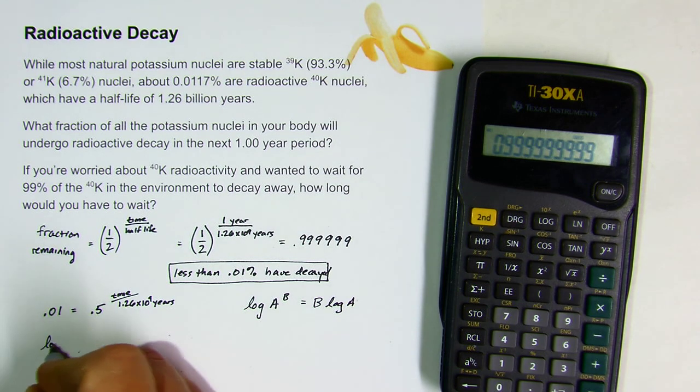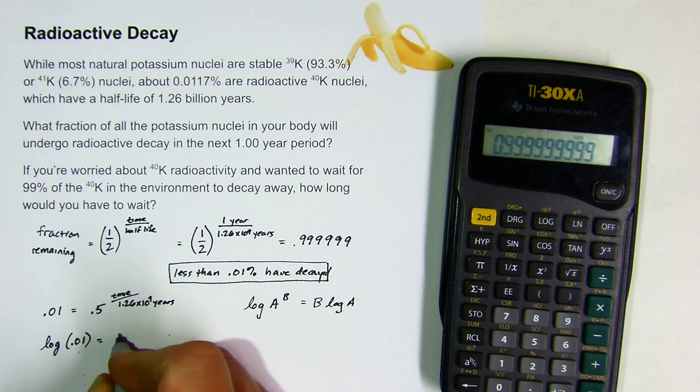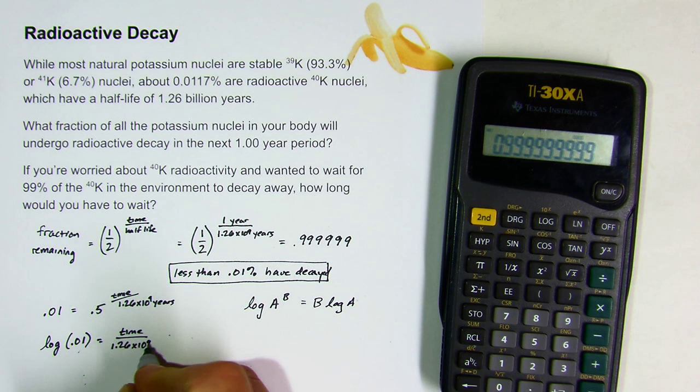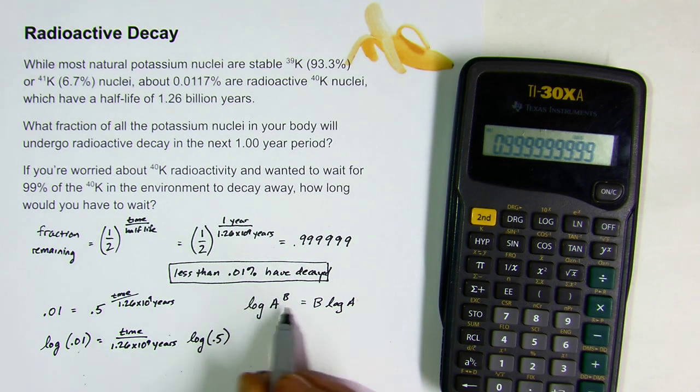So I can write that the log of 0.01 is equal to time over 1.26 times 10 to the ninth years times the log of 0.5 using that property that we just talked about here.